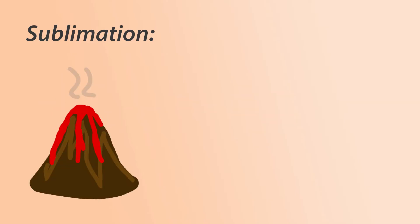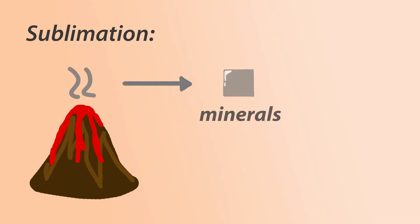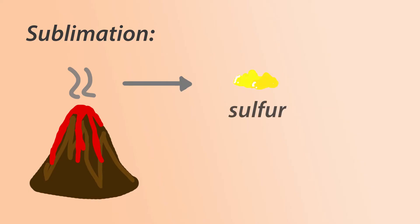Sublimation is the process of going from a gas directly to a solid. When volcanoes erupt, lots of gases are released. The contrast between the temperature of the extremely hot volcano and the much cooler atmosphere means that some of those gases form lower energy solids pretty quickly without even passing through the liquid phase. Since sulfur dioxide is released during eruptions, native sulfur is common to find around volcanoes.